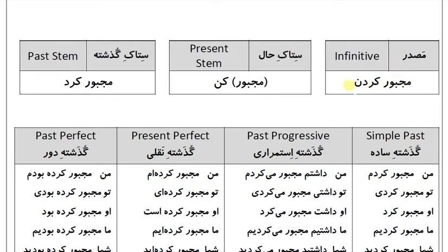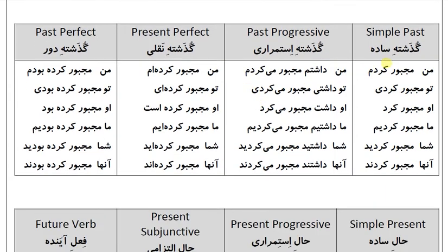مستر مجبور کردن. ستاک حال: مجبور کن. ستاک گذشته: مجبور کرد. گذشته ساده: من مجبور کردم، ما مجبور کردیم، شما مجبور کردید، آنها مجبور کردند.